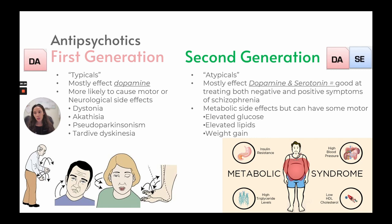Antipsychotics come in first generation, called typicals, which mostly affect dopamine and are more likely to cause motor or neurological side effects such as dystonia, akathisia, pseudoparkinsonism, and tardive dyskinesia. Second generation, called atypicals, affect dopamine and serotonin and treat both positive and negative symptoms of schizophrenia, but have metabolic side effects — elevated glucose, elevated lipids, and weight gain, leading to metabolic syndrome.